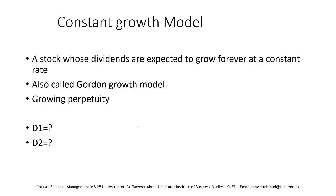Now let's develop the idea of the constant growth model, also called the Gordon growth model. This model is used when there is a growth in dividend and that growth is constant. In the zero growth model the dividend was fixed throughout. In the constant growth model there is growth, but that growth is fixed. For example, say PPL would pay 5 rupees dividend but that dividend would grow at 10 percent each year — that is an example of the constant growth model.